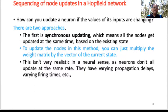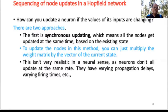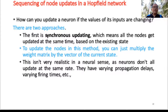An obvious question is: how can you update a neuron when its inputs are changing? There are two basic approaches. The first is synchronous updating, where all nodes get updated at the same time based on the existing state — you simply multiply the weight matrix by the vector. However, this is not realistic in a neural sense because neurons don't all update at the same rate; they have varying propagation delays and firing timings. Synchronous updating is not recommended.